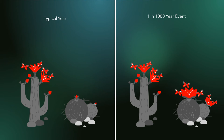One year, however, a one-in-one-thousand-year event means that the tall cactus blossom lasts significantly longer and overlaps with the short cactus blossom. This means that the mating window of the insects is vastly increased, meaning they can mate and lay eggs twice that year.